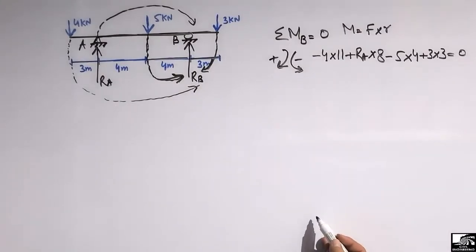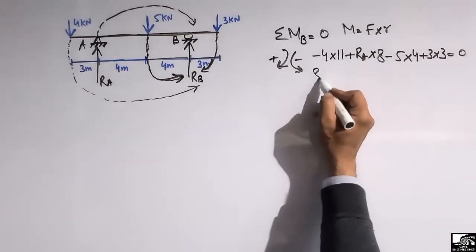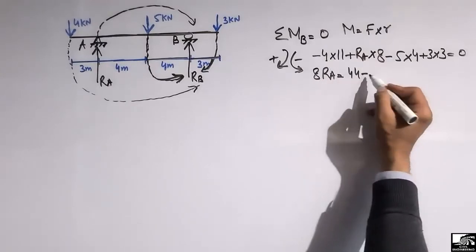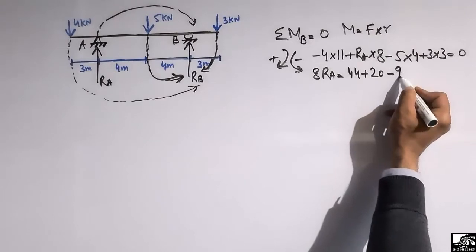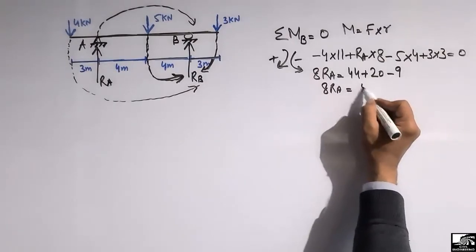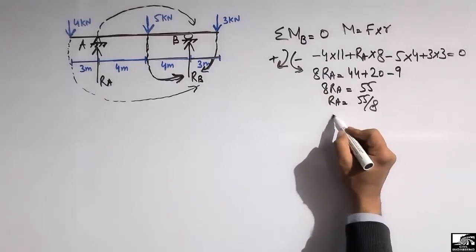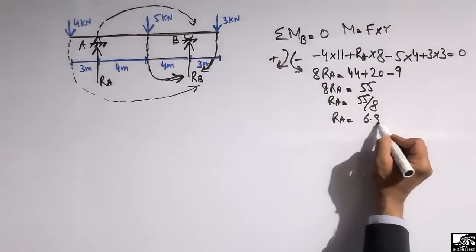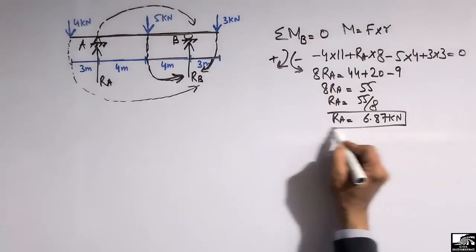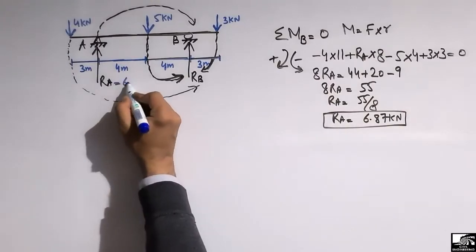Setting the summation of all moment terms equal to zero and shifting all values except 8·RA to the right side, we get: 44 + 20 − 9 = 55. Dividing 55 by 8 gives RA = 6.87 kN. So the support reaction RA is 6.87 kN.